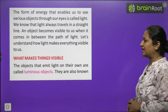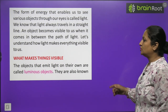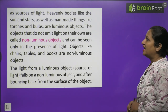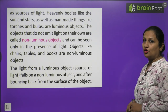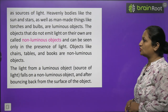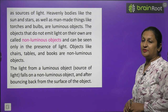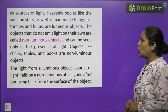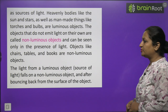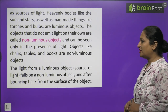Objects that emit light on their own are called luminous objects and are also known as sources of light. Heavenly bodies like the sun and stars, as well as man-made things like torches and bulbs, are luminous objects. Objects that do not emit light are called non-luminous objects and can be seen only in the presence of light. Objects like chairs, tables, and books are non-luminous objects.